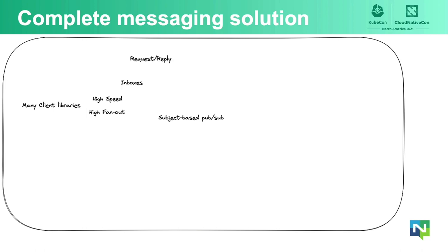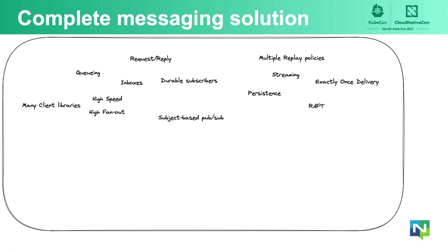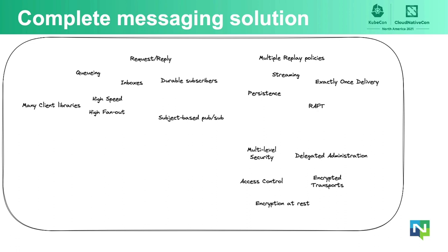NATS also allows you to do request-reply with inbox messaging and queuing durable subscribers. NATS also has streaming functionalities with persistence of streams, multiple replay policies, exactly-once delivery, and an optimized Raft quorum mechanism. NATS offers security from access control to encrypted transports, multi-level delegated administration, and encryption at rest. It also has unique features such as subject mapping and the ability to apply limits to published subjects.